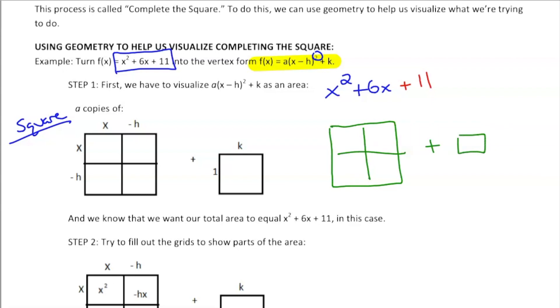We know that these two boxes have to make 6x, and because it's a square, both sides have to be congruent. So the only option would be this would have to be 3x and this would have to be 3x.